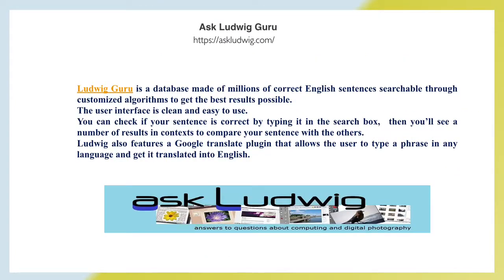Ask Ludwig is a database made of millions of correct English sentences, searchable through customized algorithms to get the best results. The user interface is clean and easy to use. You can check if your sentence is correct by typing it in the search box, then see results in context to compare your sentence with others. Ludwig also features a Google Translate plugin that allows the user to type a phrase in any language and get it translated into English.